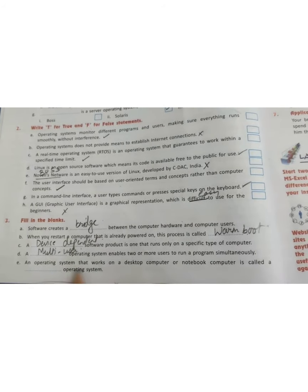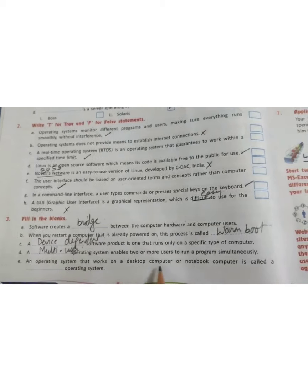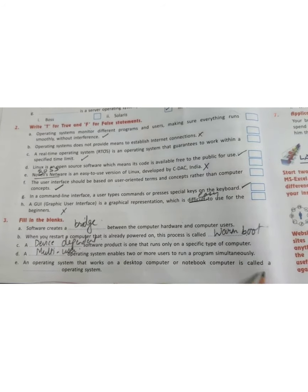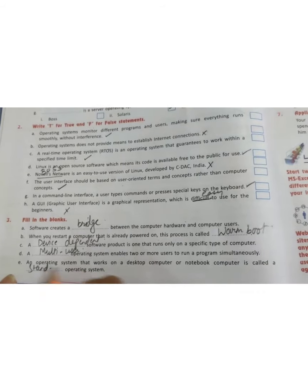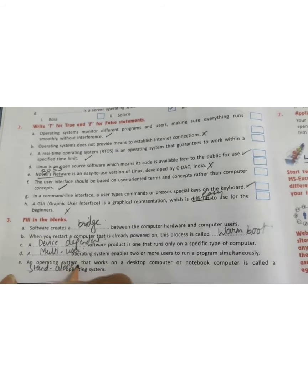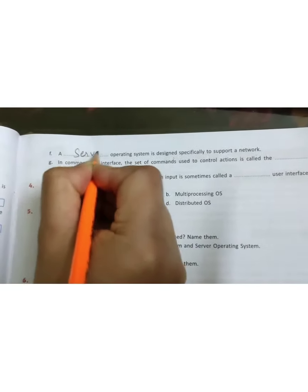Fifth one. An operating system that works on a desktop computer or notebook computer is called dash operating system, is called stand alone operating system. A dash operating system is designed specially to support a network. The answer is server operating system.